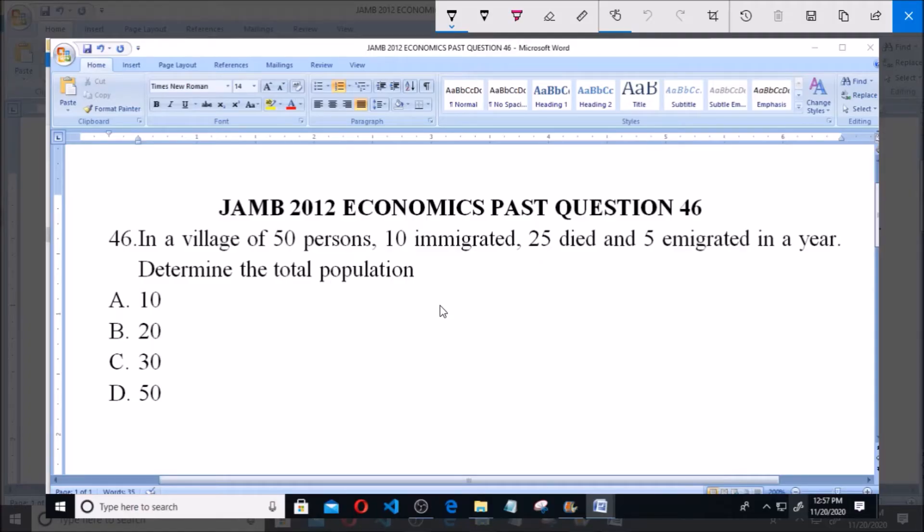In a village of 50 persons, 10 immigrated, 25 died and 5 emigrated in a year. To determine the total population, we need to calculate the total population.